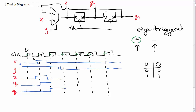Going back to Z at the fourth clock pulse, we see that Y is no longer 1. So now we have to start looking at Q1, which is what Z now depends on. We look at Q1 just before the clock pulse and change accordingly. Since Q1 is 1 for this little blip, Z shoots up to 1.